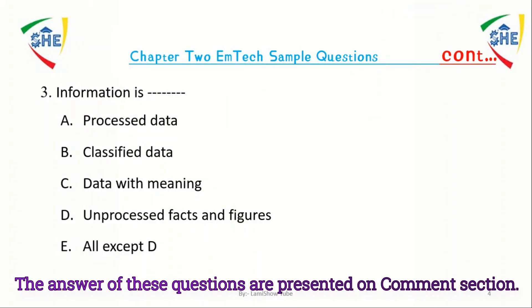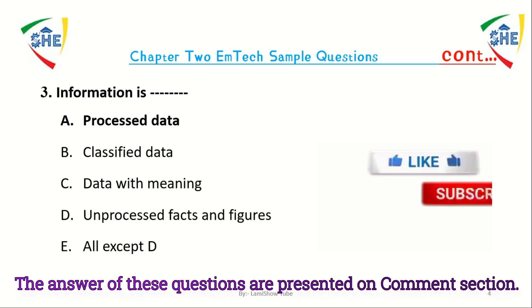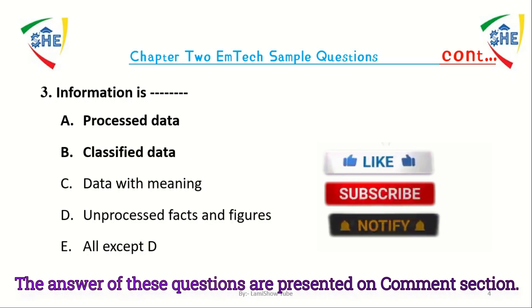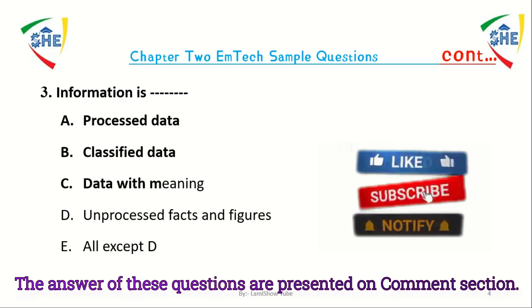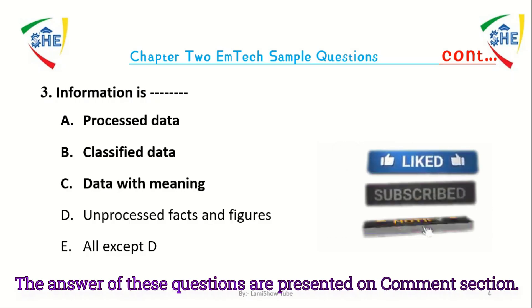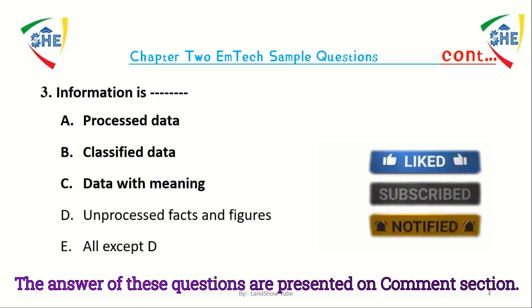Question number 3: Information is dash. A) Processed data, B) Classified data, C) Data within a meaning, D) Unprocessed facts and figures, E) All except D.